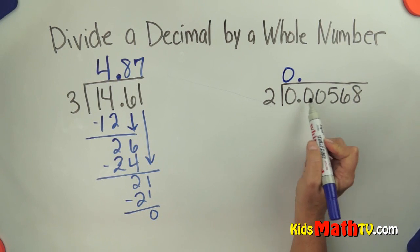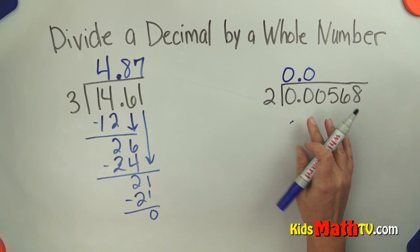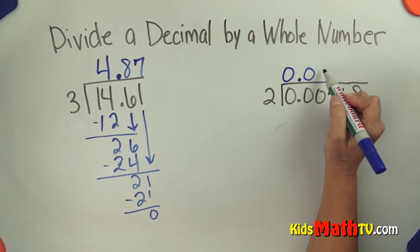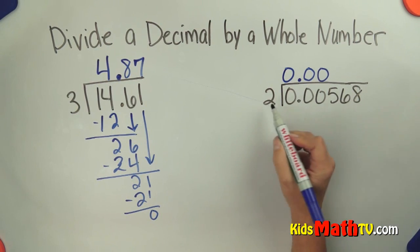How many twos are in zero? Well there's still zero but I need that decimal place, I need that placeholder there. How many twos in zero? Zero again. I need a decimal place above there.